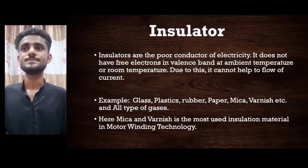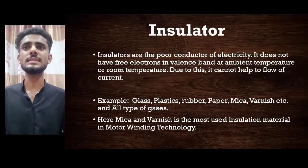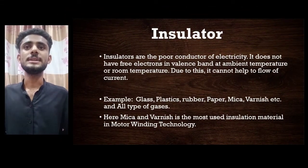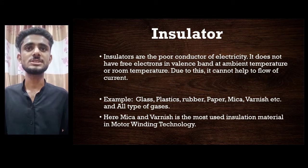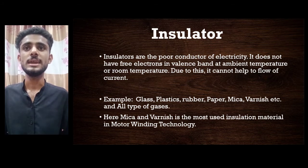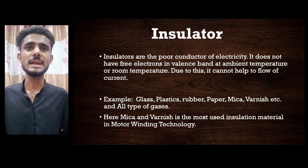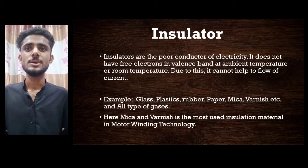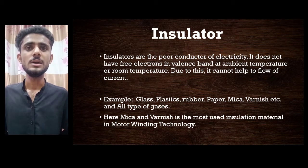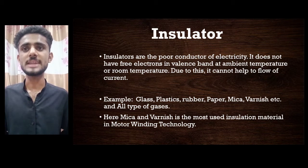Insulators are poor conductors of electricity. They do not have free electrons in the valence band at ambient or room temperature, and therefore do not allow the flow of current. Examples include gas, rubber, paper, mica, varnish, and all types of gases. Mica and varnish are the most used insulation materials in motor winding technology.